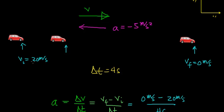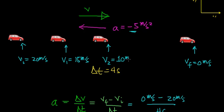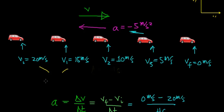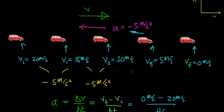After 1 second, the object's velocity is going to go from 20 meters per second and decrease by 5 meters per second, so the velocity after 1 second will be 15 meters per second. As the car continues to slow down, the velocity goes from 15 to 10 meters per second. Every single second, its velocity is decreasing by 5 meters per second. After a total time of 3 seconds, the car's velocity goes from 10 to 5 meters per second. Then in 1 more second, it goes from 5 to 0 meters per second. The change in velocity per change in time — the acceleration — is negative 5 meters per second squared at every point.